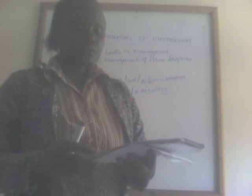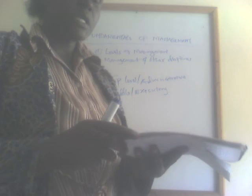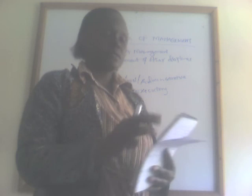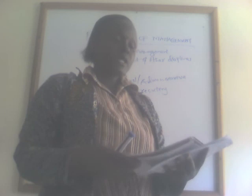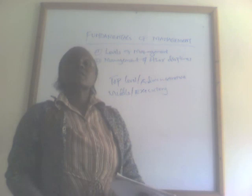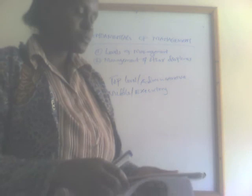We also have the lower level, also called supervisory, operative, or first-line managers. This level consists of supervisors and foremen. These are the ones who give instructions on what is supposed to be done, direct other workers on what they are supposed to do, and make corrections where possible.